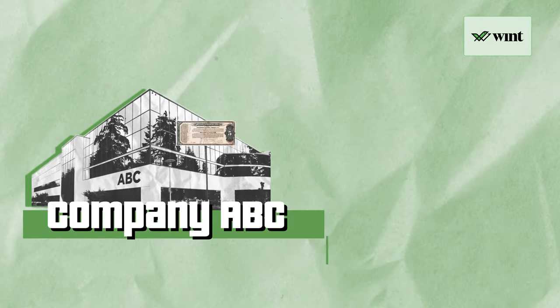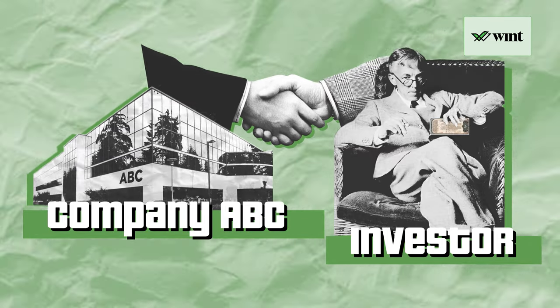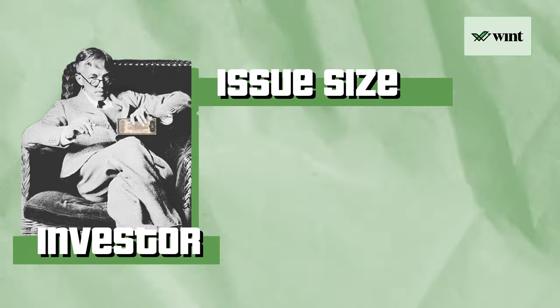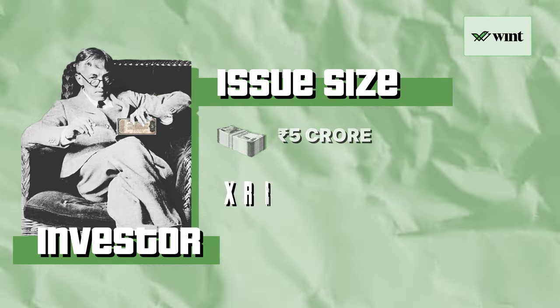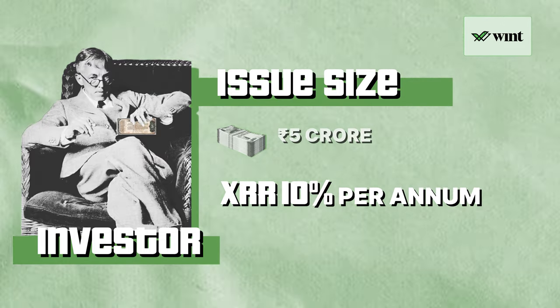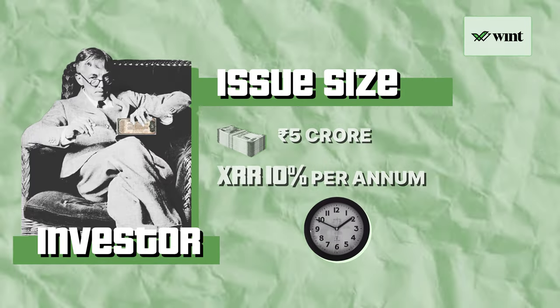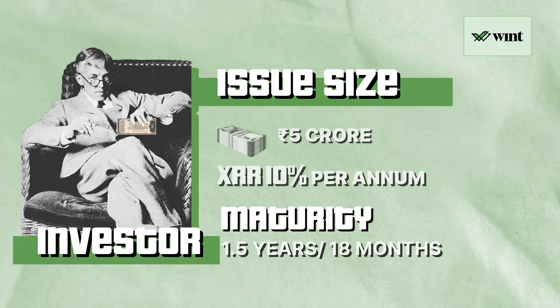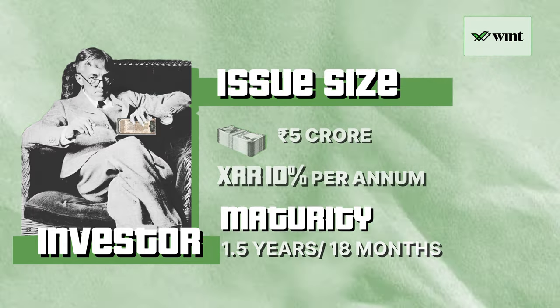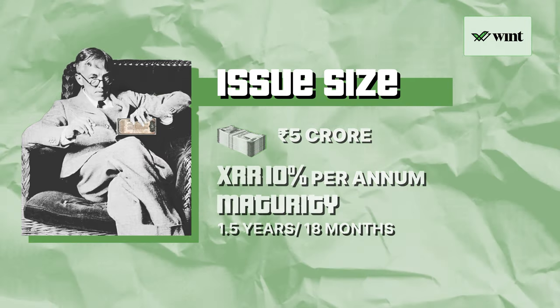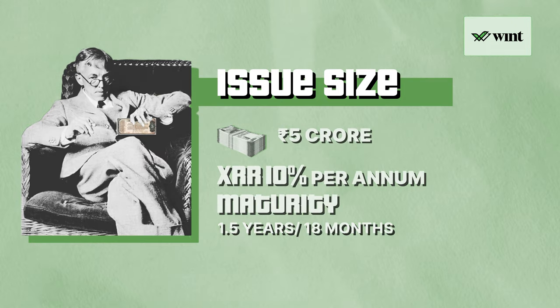Just like loans have an interest which is to be paid by the borrower to the lender, in bonds also, the company — which is the borrower — has to pay a rate of interest to the investor. The time period for which the bond is issued is called tenure. Coming back to the example, Company ABC wants to raise funds in the debt market. They decide to issue bonds. The issue size is rupees 5 crores. The rate of interest, or the return which they decide to pay to the investors, is 10% XIRR per annum. The maturity of the bond is 1.5 years or 18 months. Meaning, after 18 months, the company will pay you the final installment of the principal along with interest, after which the bond will cease to exist.